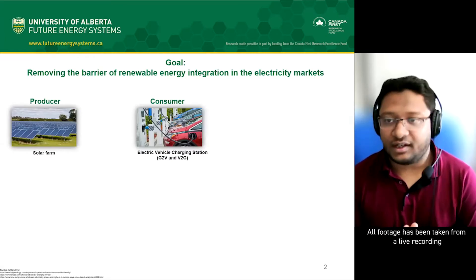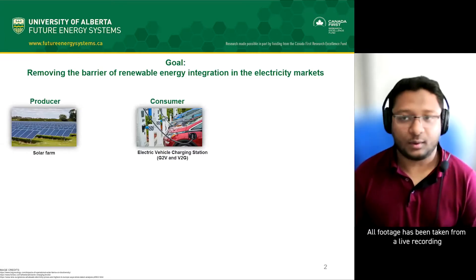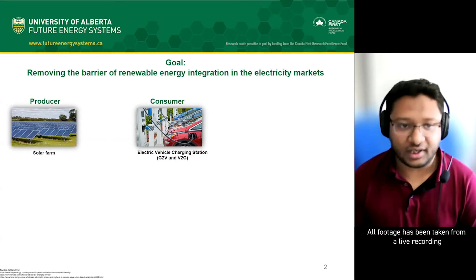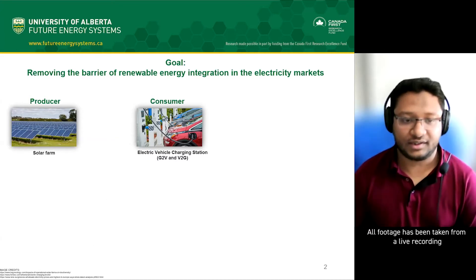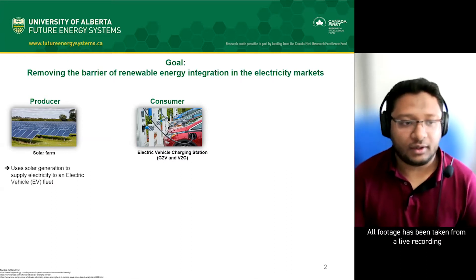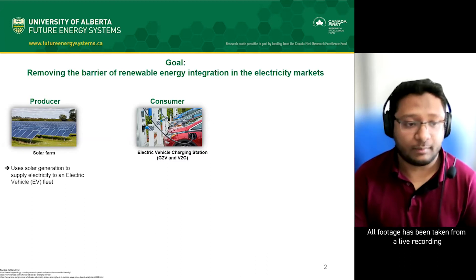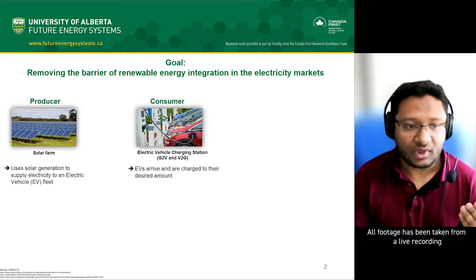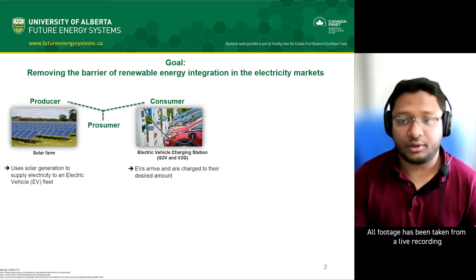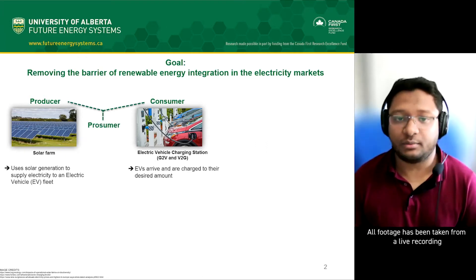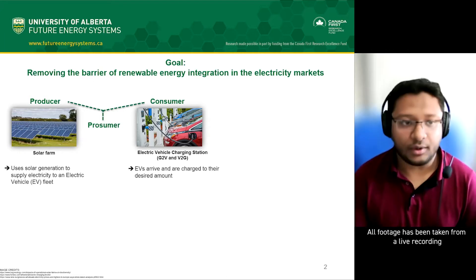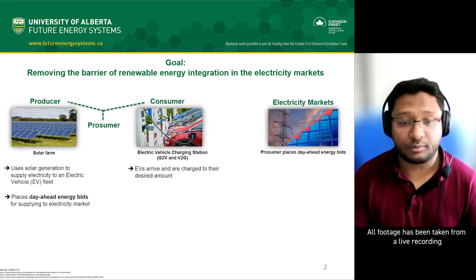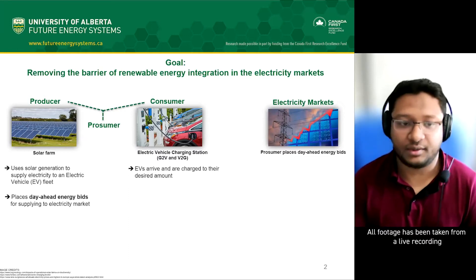In the problem setting, we have a producer who owns a solar farm and a consumer who owns an electric vehicle charging station with bi-directional charging. The solar farm owner uses solar generation to supply electricity to this EV charging station. The producer and consumer are together the same entity, which is why we refer to them as the prosumer. The prosumer also places day-ahead energy bids to the electricity market.